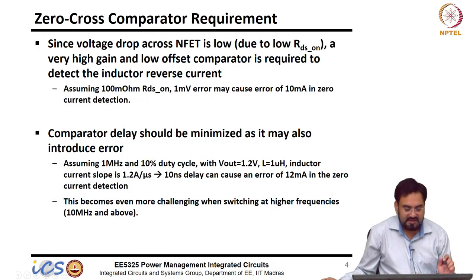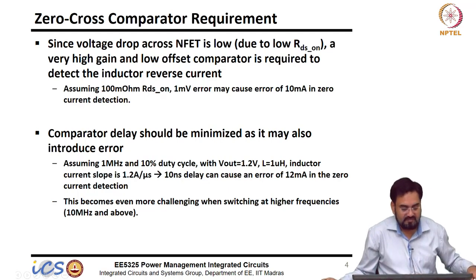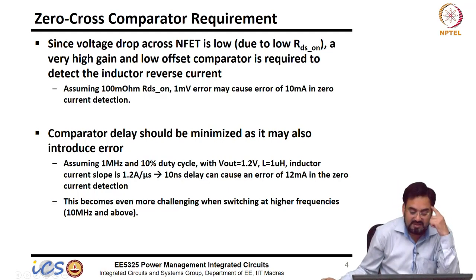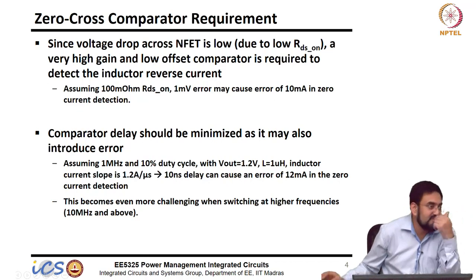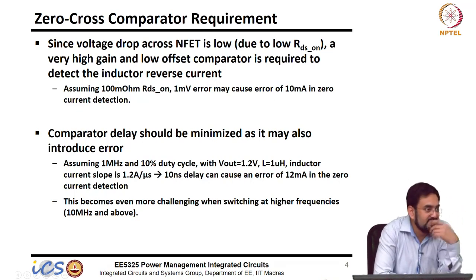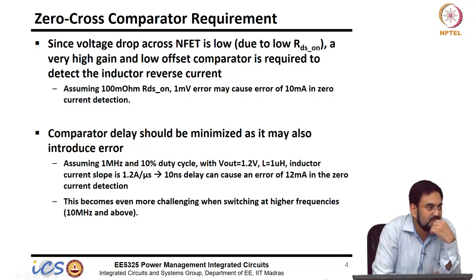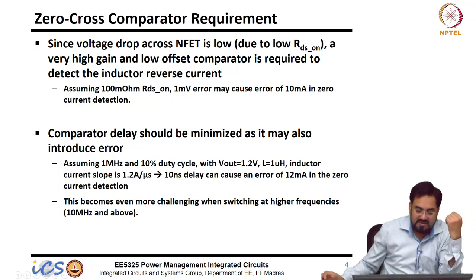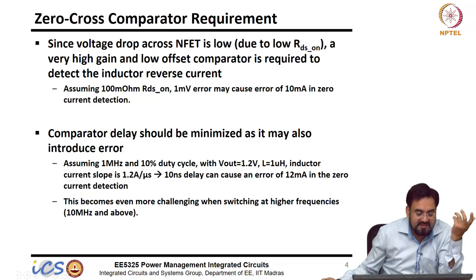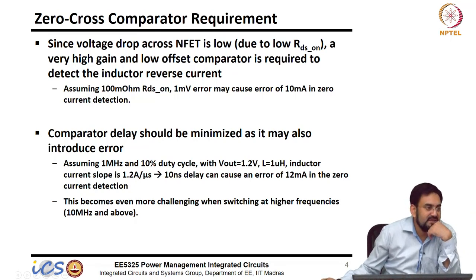These are the requirements for a zero-cross comparator. Since the voltage dropped across the NFET is low — we know the RDS_on is very low, on the order of 50 to 100 milliohms — even when you apply the full load, that will be on the order of 50 to 100 millivolts only. Which means we need a very high gain and low offset comparator.